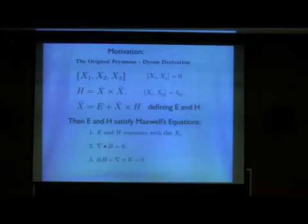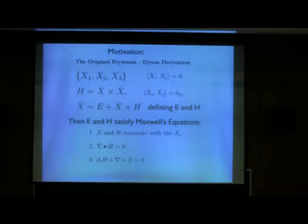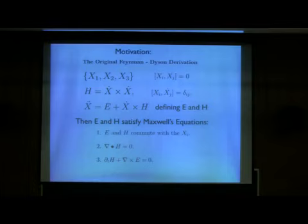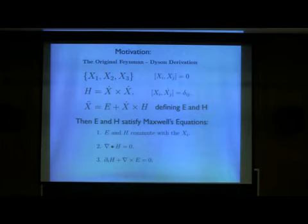What Feynman did was suppose that you have three variables which are non-commuting — so they're operators — and they represent spatial points in space, and they commute with one another, and they have time derivatives. The commutator of xi and xj-dot is delta-ij. It's not assumed that the xj-dots commute with one another, so they are not the usual kind of momenta seen in quantum mechanics.